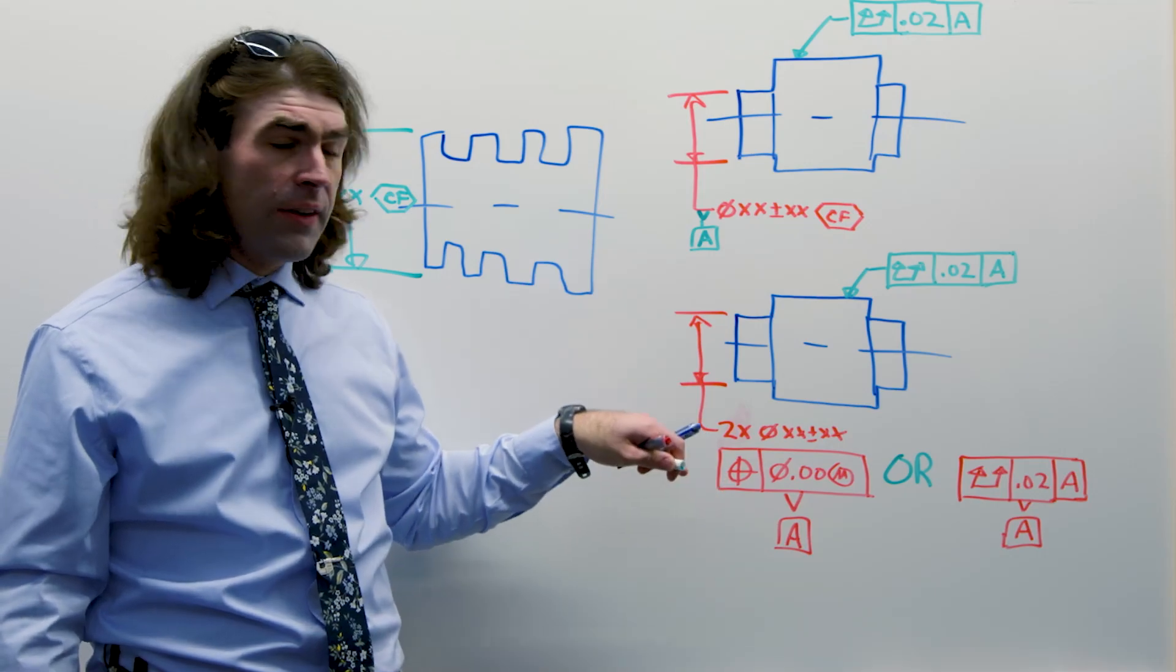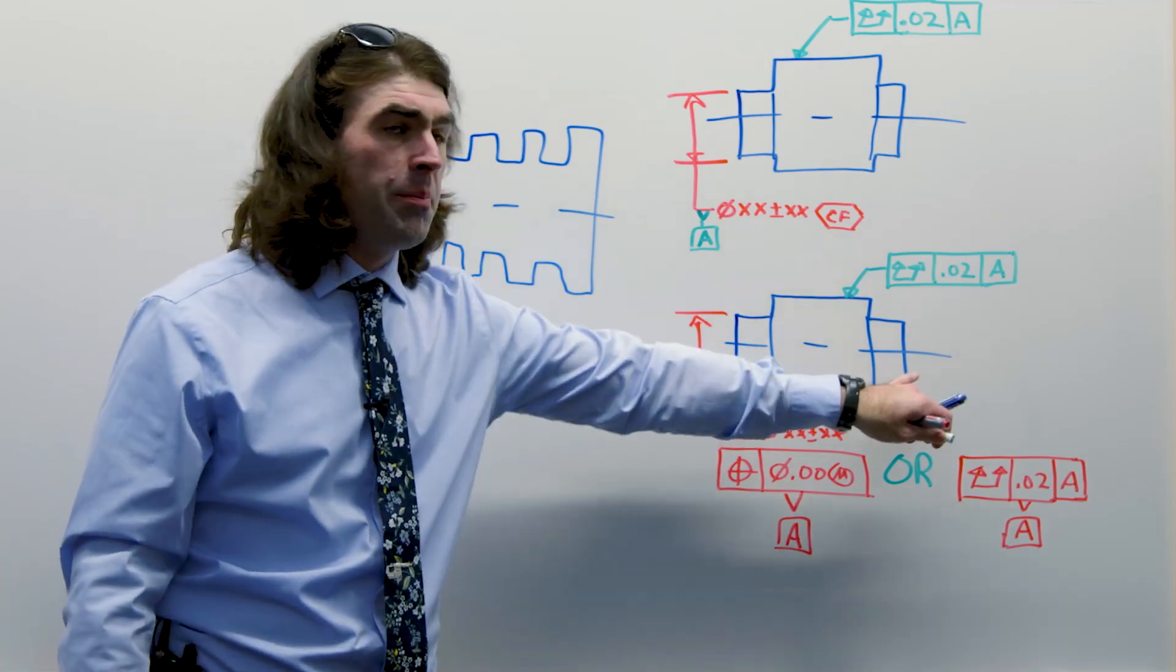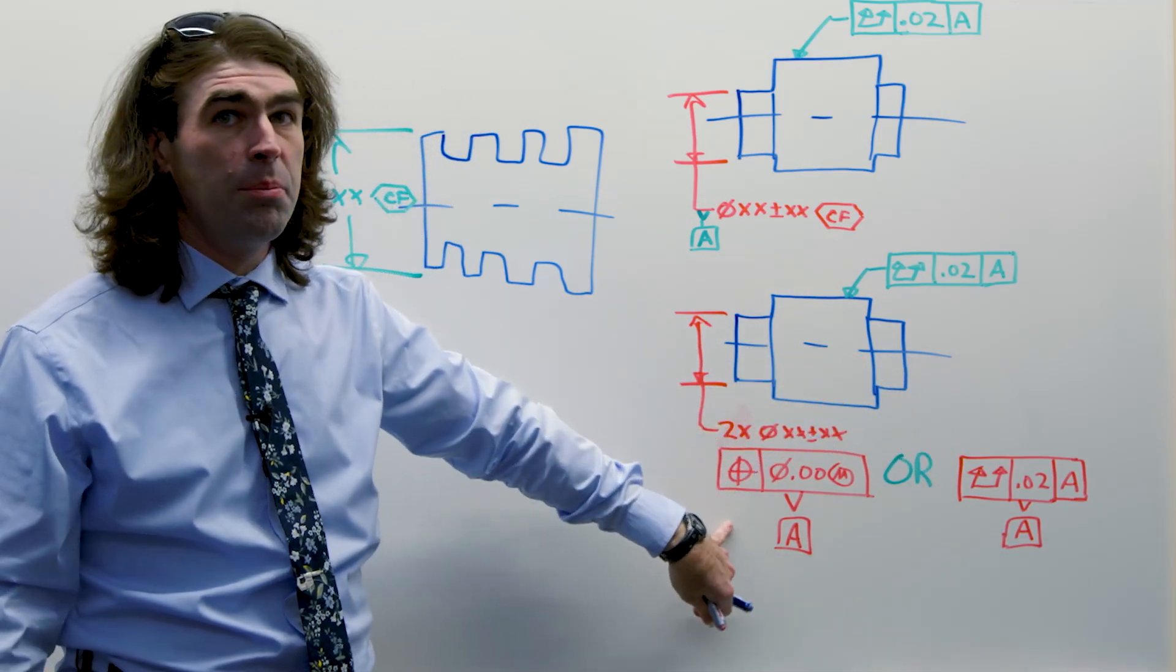This would only work if those two diameters are the same size. So I could do datum A, B, make it a common datum, or if they're the same size, I could just call them both A.